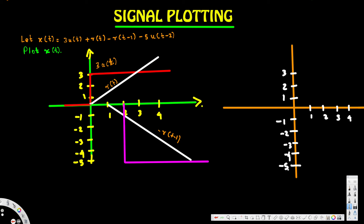For t ≥ 0, we have both r(t) and 3u(t) active. At the very start, r(t) is 0, so the combined value begins at 3. Then r(t) increases linearly, shifting the graph upward from that starting value of 3.